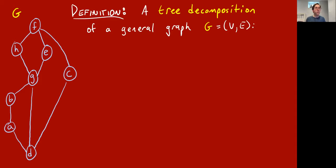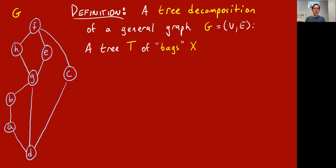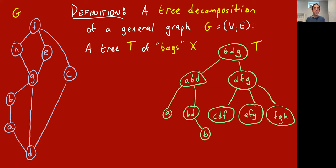Say you have some general graph G like the one shown on the left. Forget about the fact that it happens to be a series-parallel graph with terminals F and D; just think of it as some graph. A tree decomposition of such a graph G is itself a tree T, where the vertices of the tree are called bags — I'll use the notation X for a bag. Here is a tree decomposition T for this graph G.